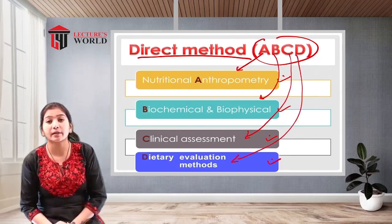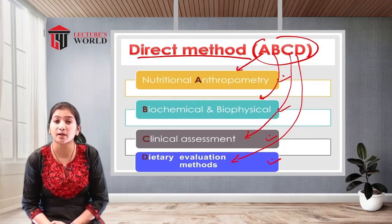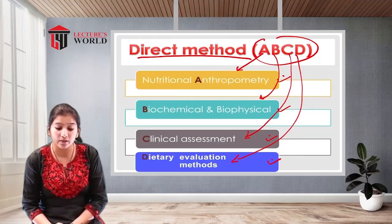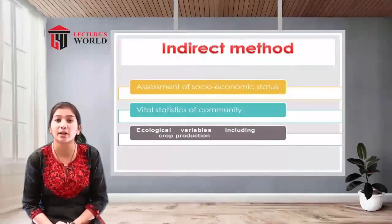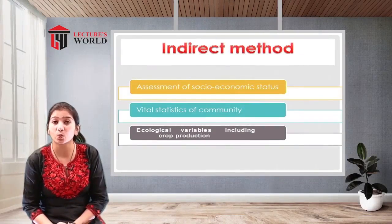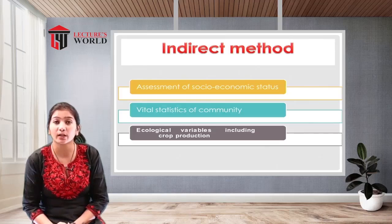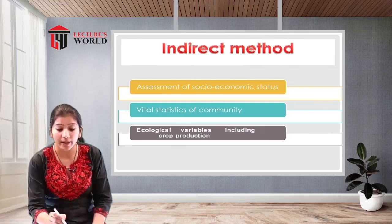Anthropometric tests involve examination of height, weight, head circumference, chest circumference, and mid-arm circumference. Biochemical and biophysical tests include blood tests, urine tests, stool tests, and biophysical tests using machinery such as X-ray and ultrasonography. Clinical assessment involves head-to-toe examination. Dietary evaluation involves evaluation of the dietary pattern.